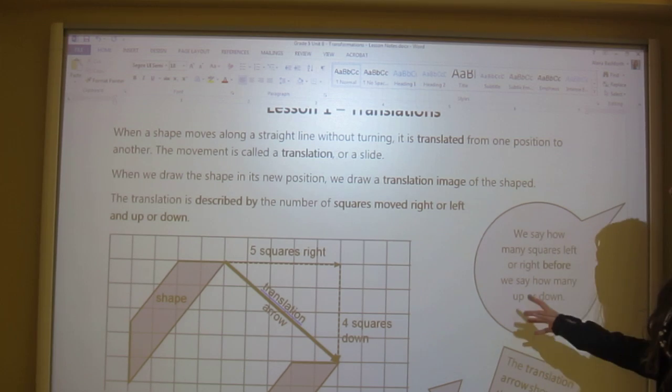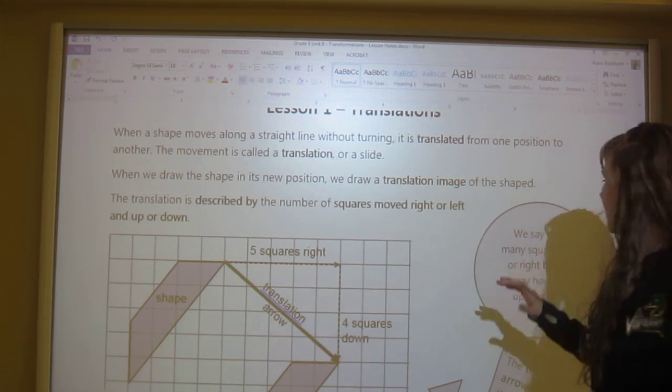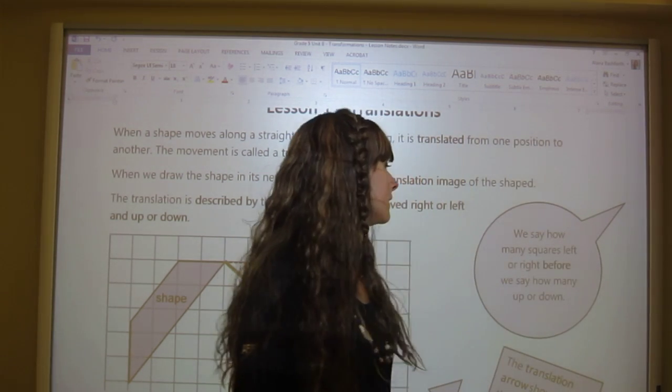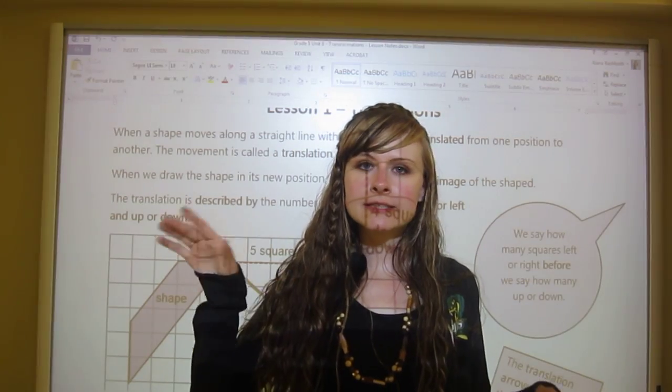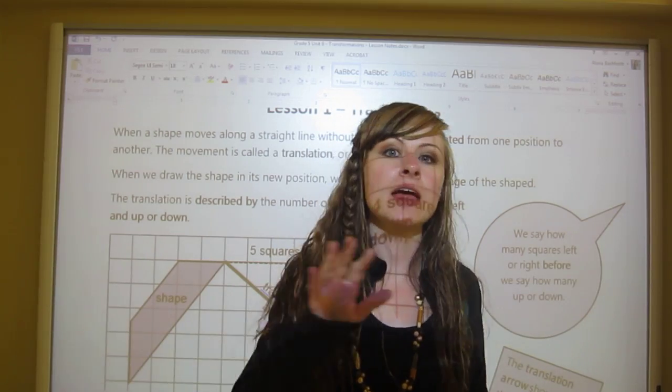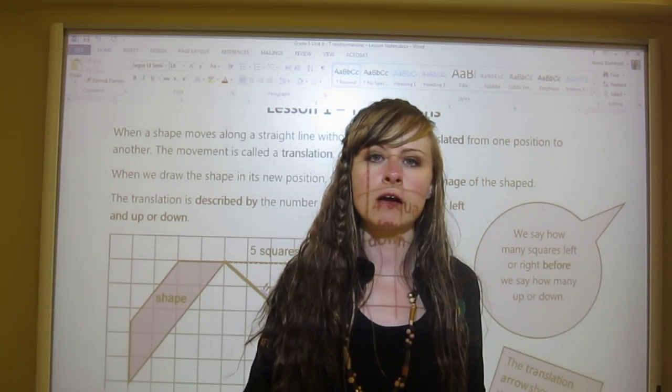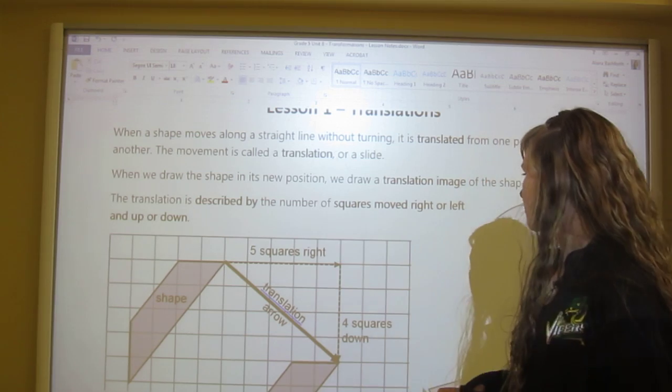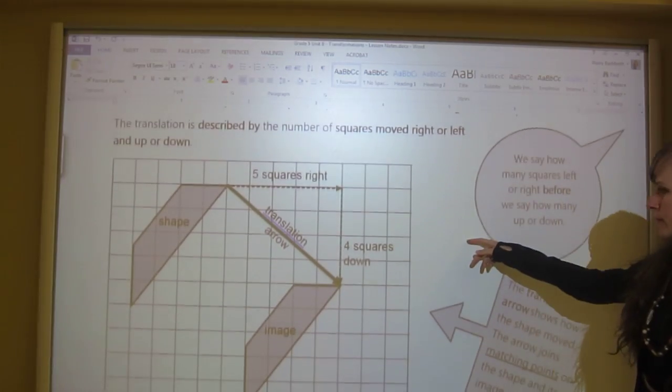We say how many squares left or right before how many up or down. So we're going to say how many squares it moved across and then how many it moved up or down. It's important that you follow the proper formatting.